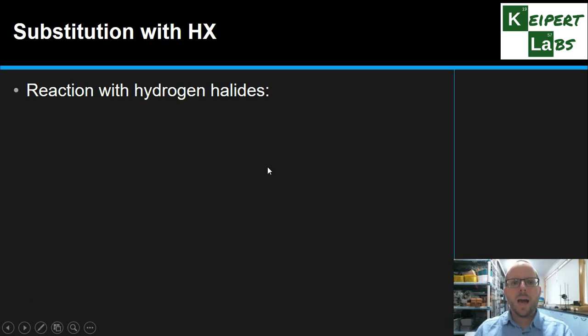Alright, so now we're going to look at substitution reactions. Probably one of the more complicated ones we're going to focus on in this video, so bear with me. So, we're looking at the reaction of an alcohol with a hydrogen halide, like HCl, HBr, HI. And what's happening is that the OH group is being substituted with the halide, the halogen atom.